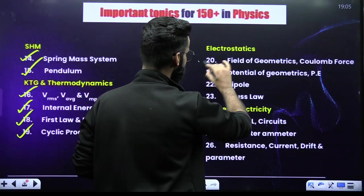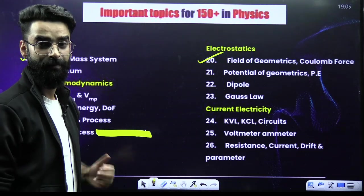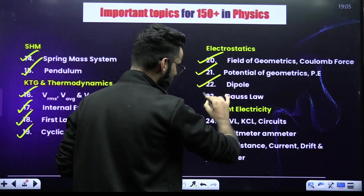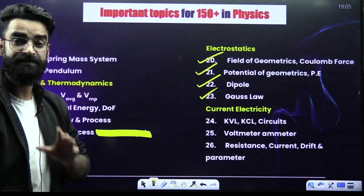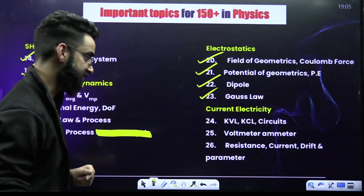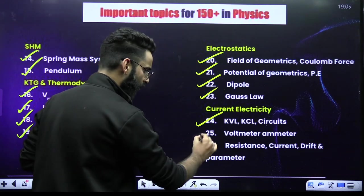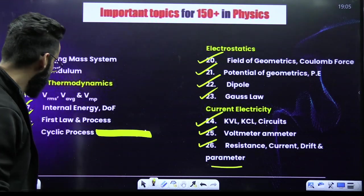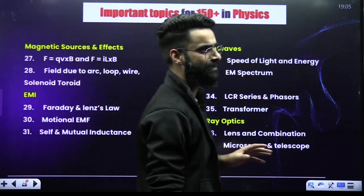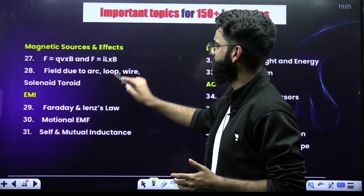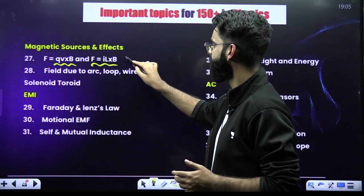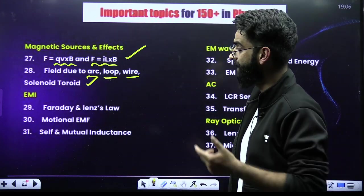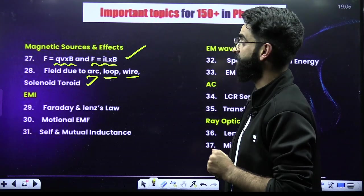In Electrostatics: electric field — one of the most important topics — potential, dipole, and Gauss's law. For Current Electricity: KVL and KCL circuits, voltmeter and ammeter, resistance, current, and drift parameters. When it comes to Magnetic Sources and Effects: field due to arc, field due to loop, field due to wire and solenoid-toroid — these are important topics from the chapter Magnetism.